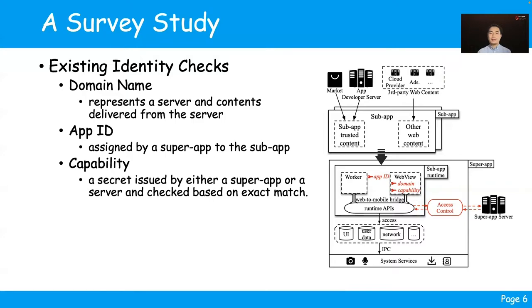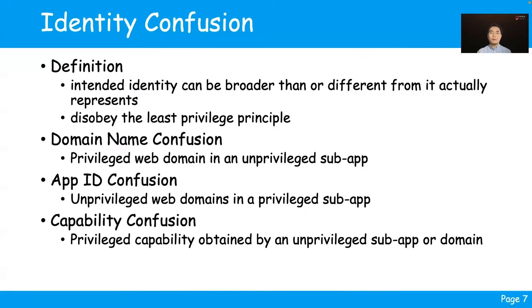Existing super apps often perform identity checks in three different ways: first, through a domain name as part of the web origin; second, an app ID assigned by the super app; and third, a secret or token capability issued by either a super app or a server. When the web content calls a privileged API with its capability, it will be verified by the super app. However, different identities often coexist for a given entity in a WebView instance. When a super app grants a permission to the intended identity, we find it can be broader than or different from what it actually represents, and thus violates the least privilege principle.